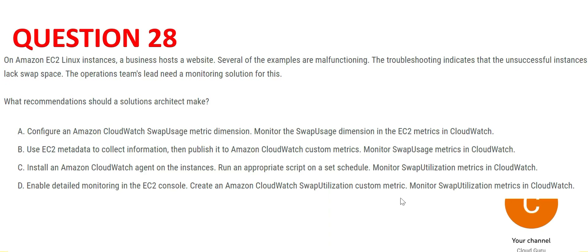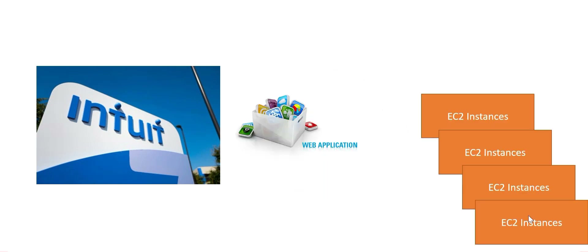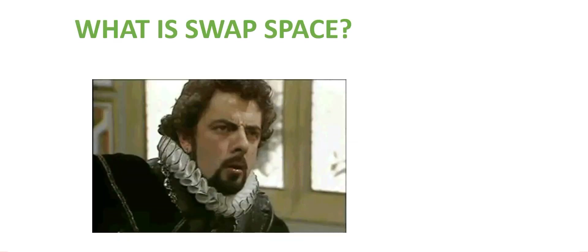Let's understand the story for question 28. Consider a company called Intuit that has a web application residing on EC2 instances. There is a malfunction, and troubleshooting reveals the malfunction is because of lack of swap space.